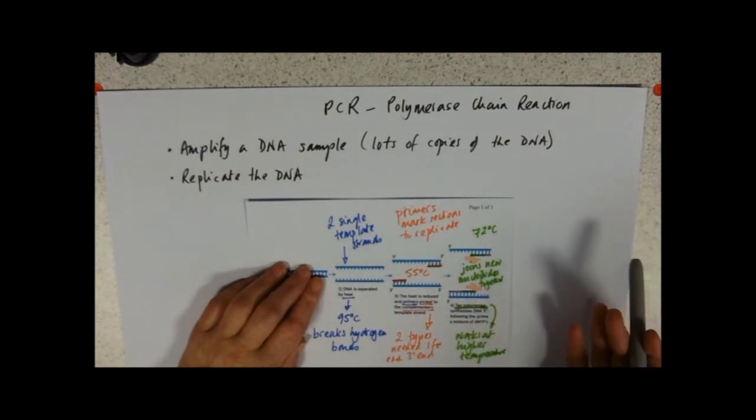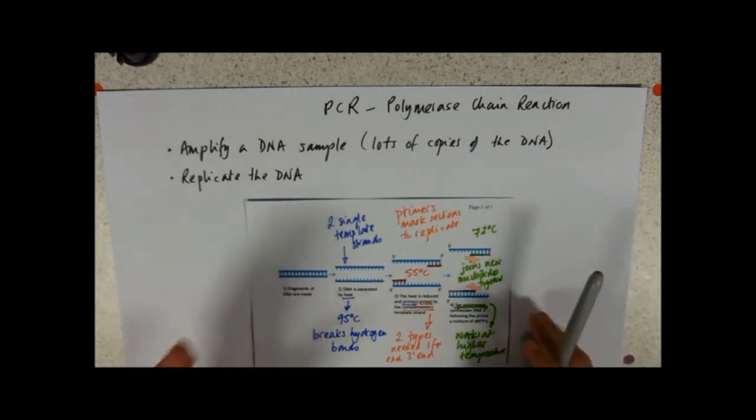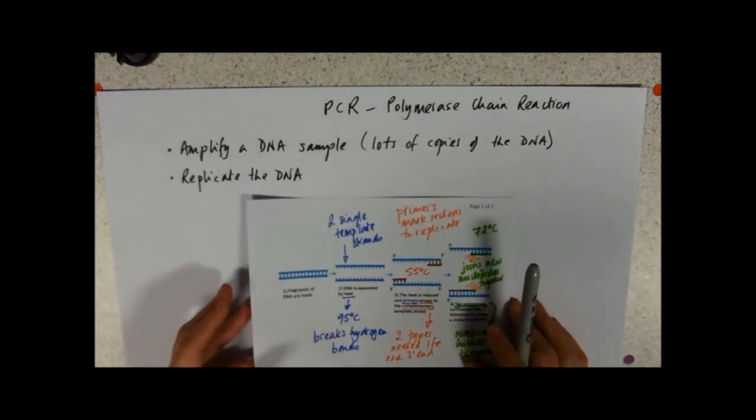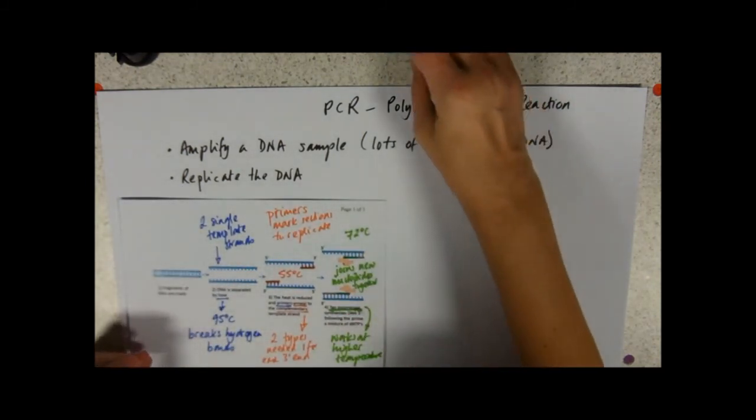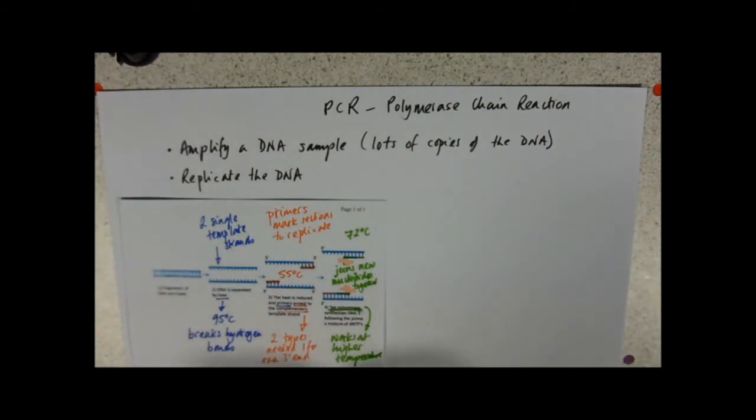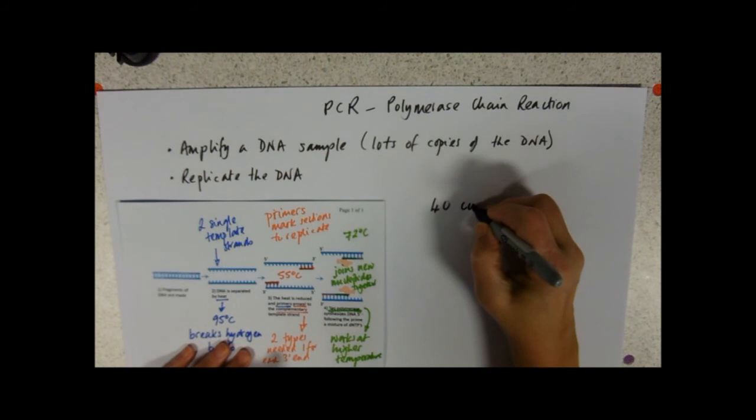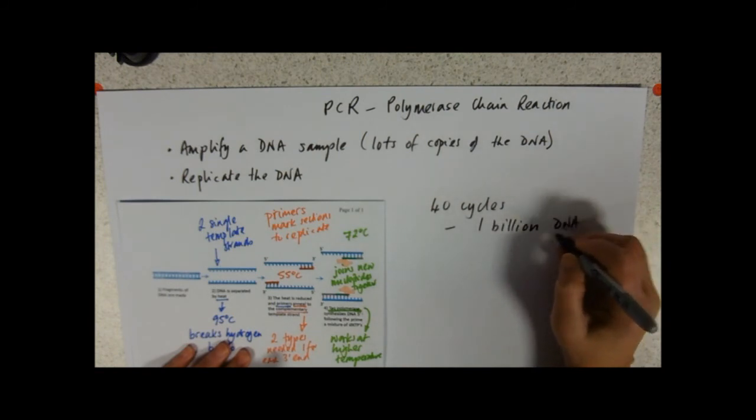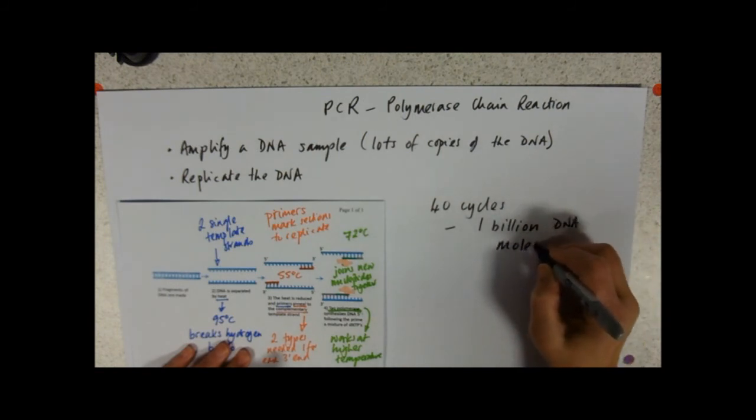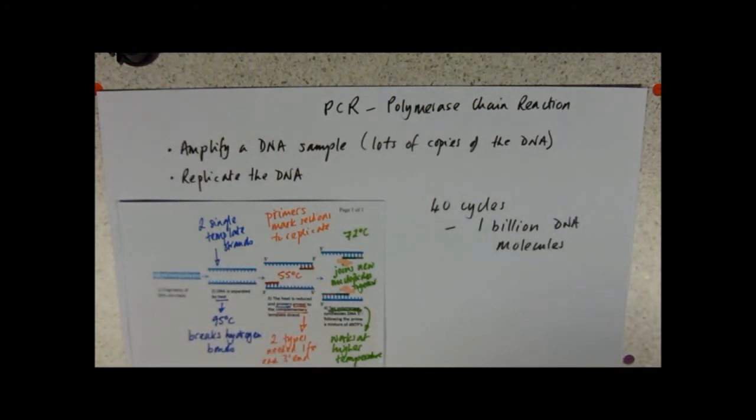And then you can raise it to eight. Sixteen. Thirty-two. Sixty-four. Hundred and twenty-eight. Can't do any more maths than that. So effectively you're just increasing the number. It is a phenomenally efficient process. And over the course of forty cycles. That's not very many. You can get one billion DNA molecules. All copied from that initial DNA.